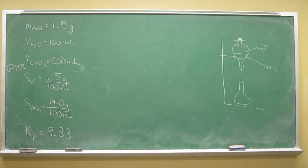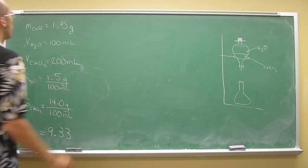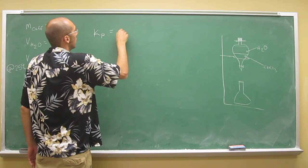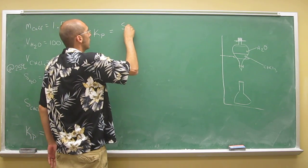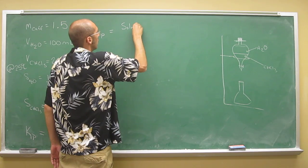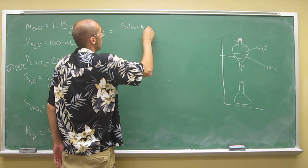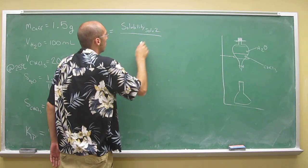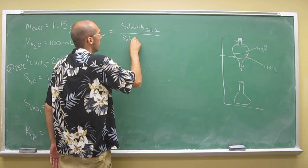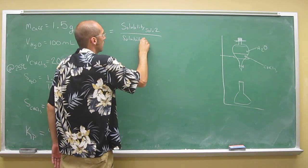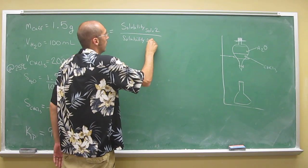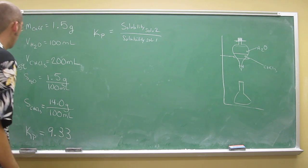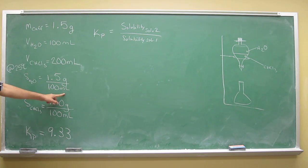So how would we do this? Remember, we said that the Kp is going to be the solubility in solvent 2, so that's going to be chloroform, to the solubility of the solute in solvent 1, which is going to be water. Solubility is grams per volume. In other words, we have mass per volume.